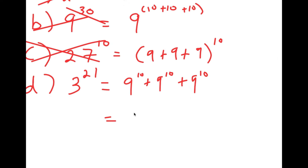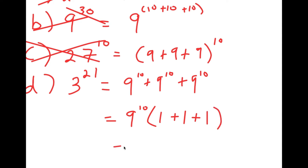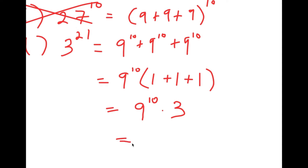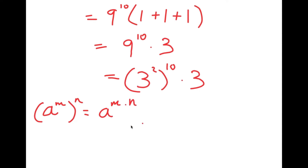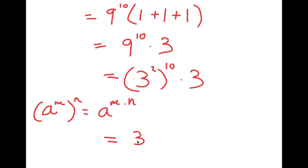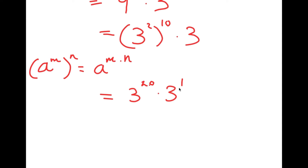We start with 9 to the power of 10 plus 9 to the power of 10 plus 9 to the power of 10, and factor out 9 to the power of 10, giving us 9 to the power of 10 times (1 plus 1 plus 1), which equals 9 to the power of 10 times 3. This becomes 3 squared to the power of 10 times 3. Using the rule that a^m^n equals a^(m×n), we get 3 to the power of 20 times 3 to the power of 1, and adding exponents gives us 3 to the power of 21.